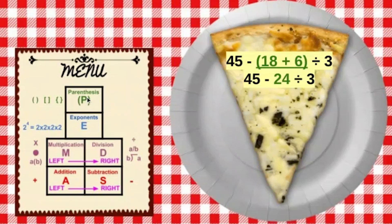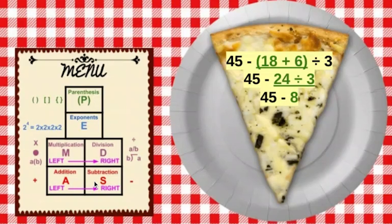So what is 18 plus 6? 24. Now looking at this problem, we don't have any more parentheses and we don't have any exponents, but we do have division. So we're going to do 24 divided by 3, because multiplication and division come before addition and subtraction. 24 divided by 3 is 8. So 45 minus 8 is our last problem. 45 minus 8 equals 37. Notice it makes this little triangle — kind of like a pizza slice! You want to solve one step at a time and it should make this lovely little triangle.